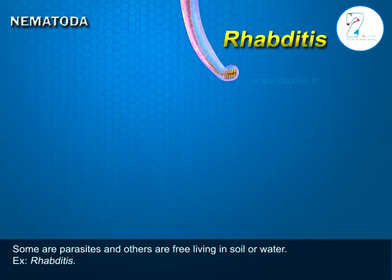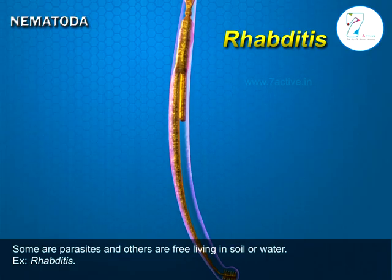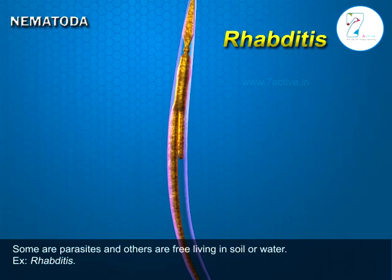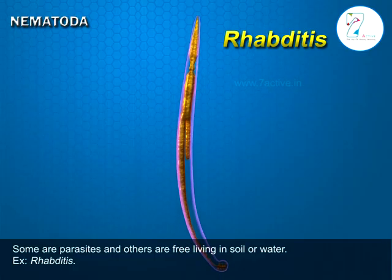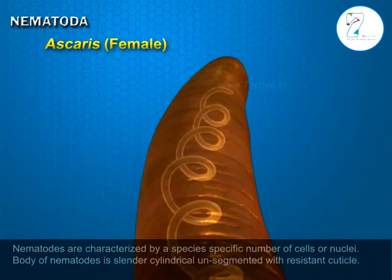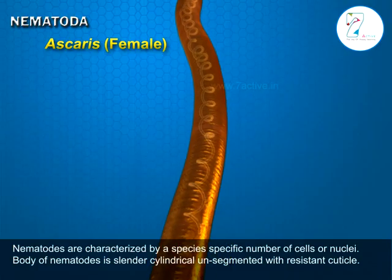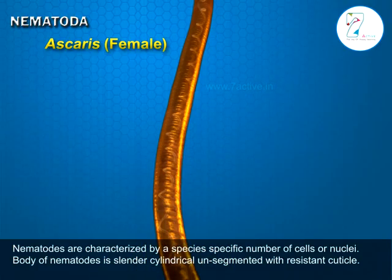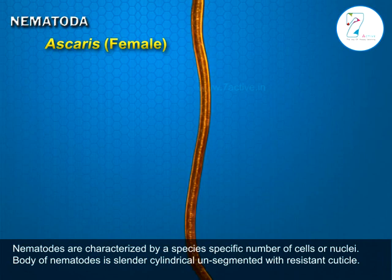Some are parasites and others are free living in soil or water. An example is Rhabditides. The body is long and cylindrical without segmentation. Nematodes are characterized by a species-specific number of cells or nuclei.